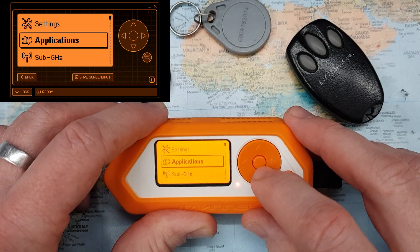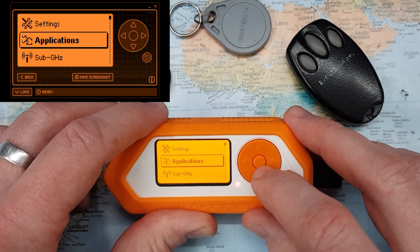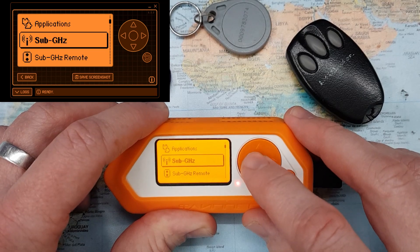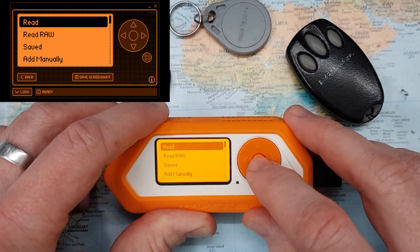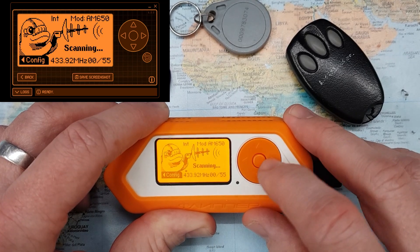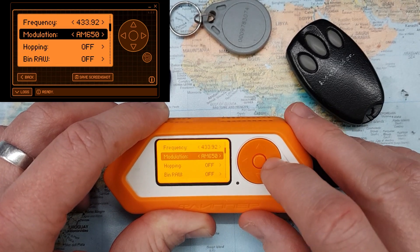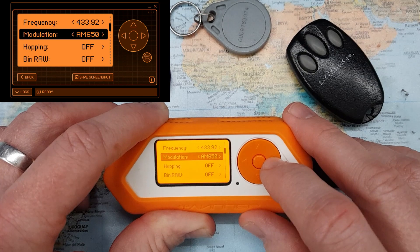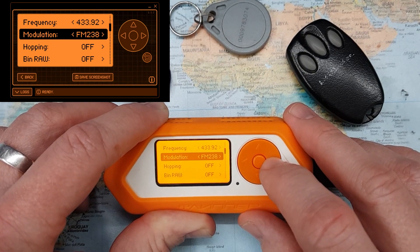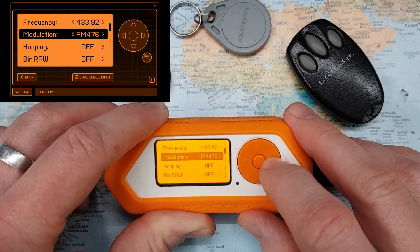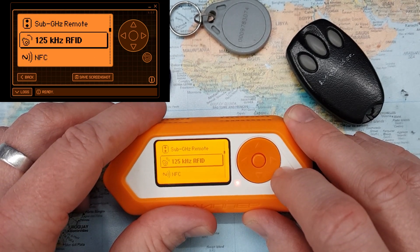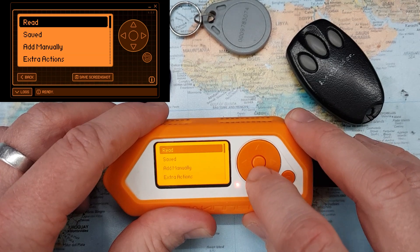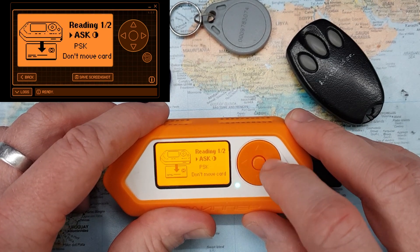So what is the difference in reading AM and FM when you are reading sub-gigahertz signals using the Flipper? Here you can see that in the config we can adjust the modulation for AM 650 or AM or FM 238, FM 476, and so on. And what is the difference in ASK and PSK when reading RFID tags or cards?